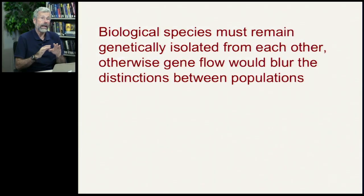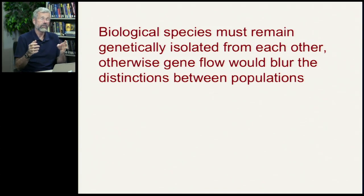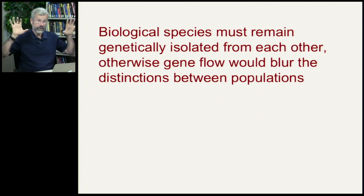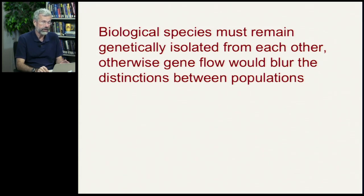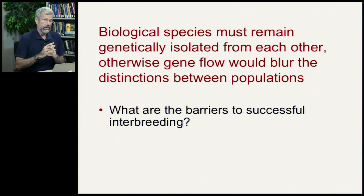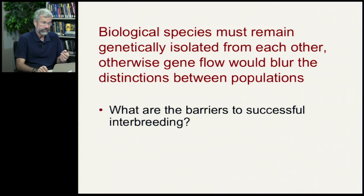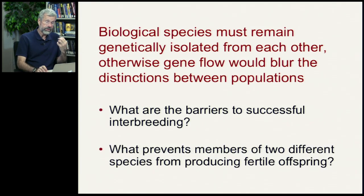For this to be true, there has to be separation. There cannot be frequent exchange of genetic material between different species, otherwise they would become genetically too similar and we'd want to think of them as just one big population. Biological species must remain genetically isolated from each other, otherwise gene flow would blur the distinctions between populations. So what we want to look at now are the barriers — what are the barriers to successful interbreeding? What prevents members of two different species from producing fertile offspring?